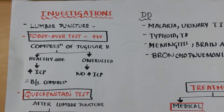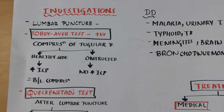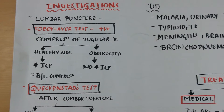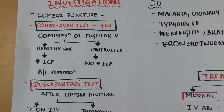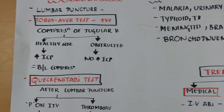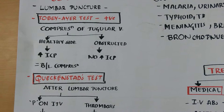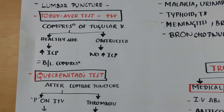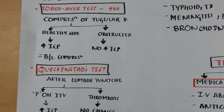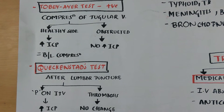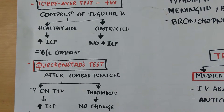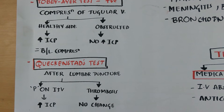Coming to the investigations of lateral venous sinus thrombosis, lumbar puncture is done. It demonstrates increased intracranial pressure. For this, the Tobey-Ayer test and Queckenstedt test are done. The Tobey-Ayer test is positive — that is, compression of the jugular vein on the healthy side results in increased intracranial pressure, equal to bilateral compression of jugular veins. In case of the obstructed side, there is no increase in intracranial pressure.